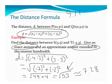Some of you may be wondering, what if we got something that could be simplified? For example, let's say my distance ended up being the square root of 48. What would I do?